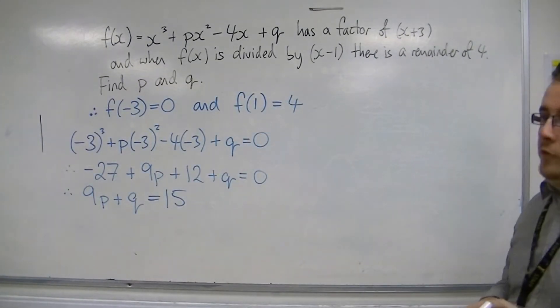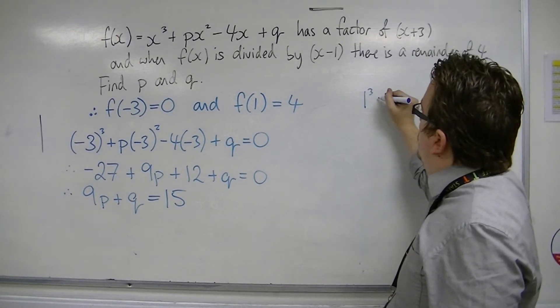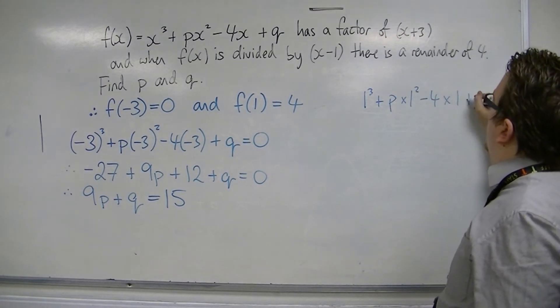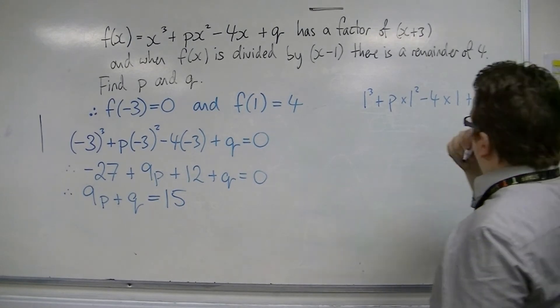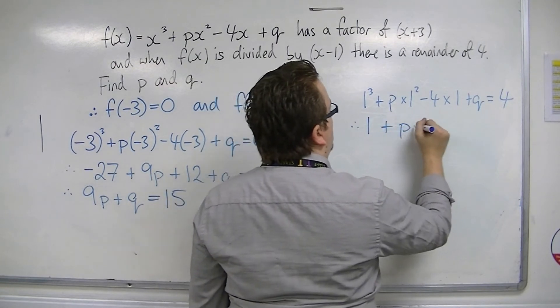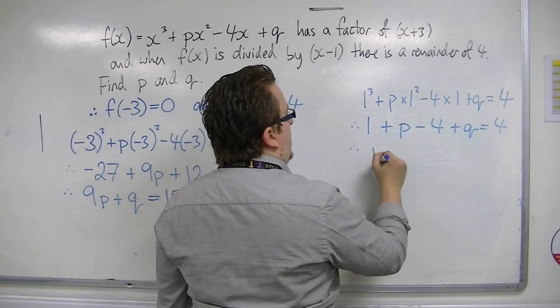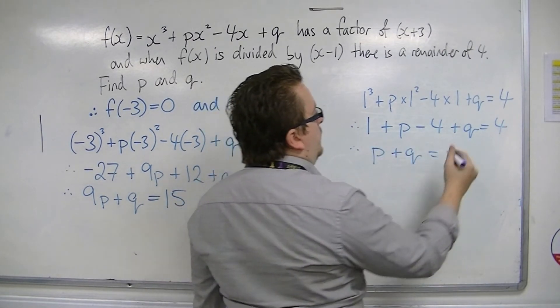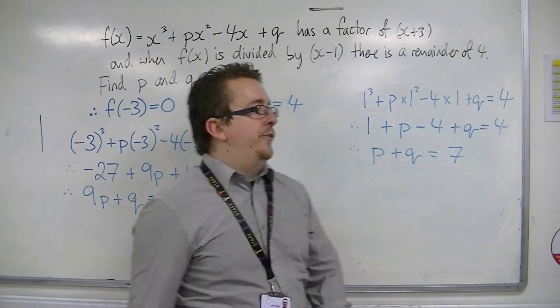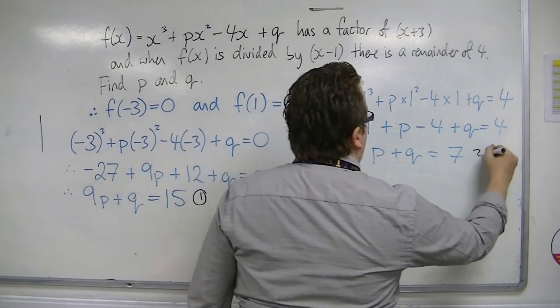From f of 1 is 4, if we find out what f of 1 is, that is 1 cubed plus p lots of 1 squared, take away 4 lots of 1, plus q equals 4. So 1 plus p minus 4, plus q is 4. So p plus q must be equal to 7. So 1 take away 4 is minus 3, add 3 to both sides.